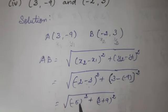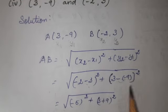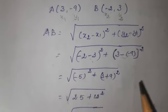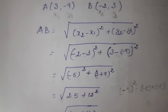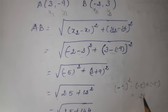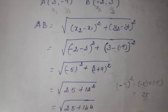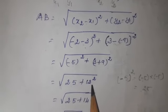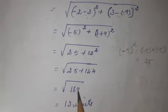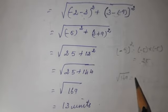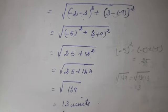Simplifying: (-5) whole square means (-5) into (-5). Minus into minus gives plus, so that is 25. And (3 + 9) = 12, so 12 squared = 144. Square root of 25 + 144 = square root of 169. Since 169 = 13 × 13, and in the square root two same numbers give one number out, the answer is 13 units.